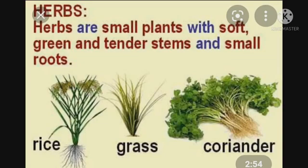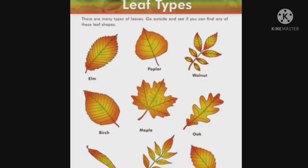The next part of the chapter is the different types of leaves. Where do the leaves grow? Leaves grow on the branches and they are of different shapes and sizes. As you can see in the picture there is a walnut leaf, birch leaf, maple leaf, oak leaf, ash leaf and so on.